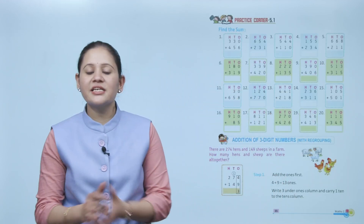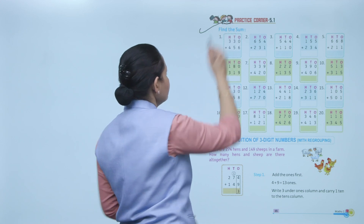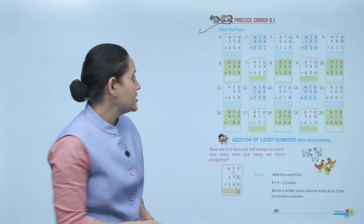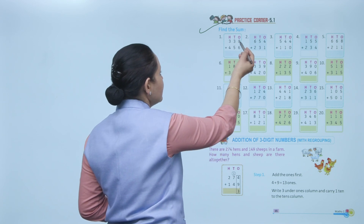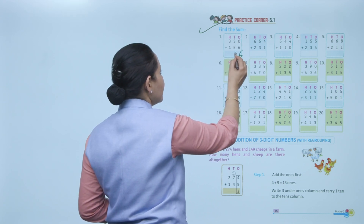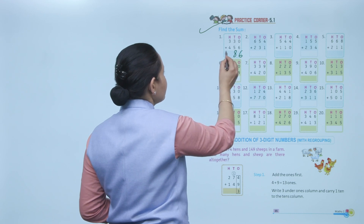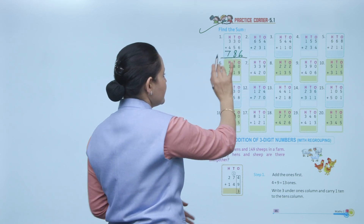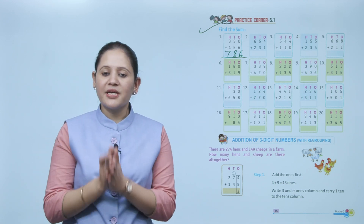Practice corner 5.1 — find the sum. We have to add 313 and 456. Starting from ones: 0+6=6, 5+3=8, 4+3=7. The sum is 786. You have to practice all the sums.